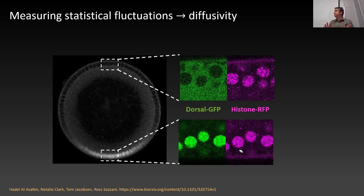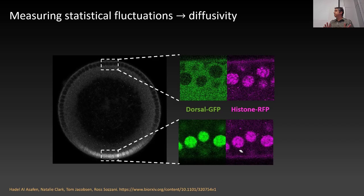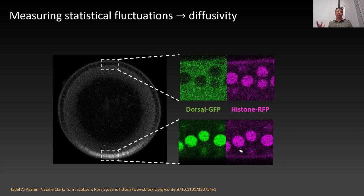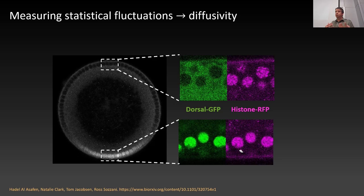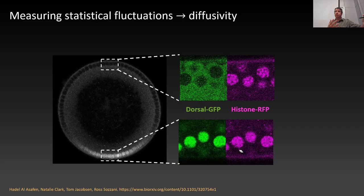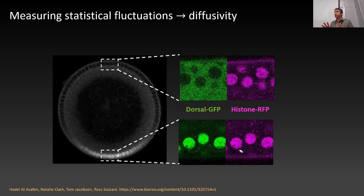These videos are a little bit grainy, and it's not because we're doing a bad job imaging or because the microscope has a lot of noise. It's actually because what we're looking at is statistical movements of individual dorsal GFP molecules. We could average multiple time frames together and it looks smooth, but the noise is actually what we're looking for — these are real true statistical fluctuations of the dorsal GFP molecules in the tissue.